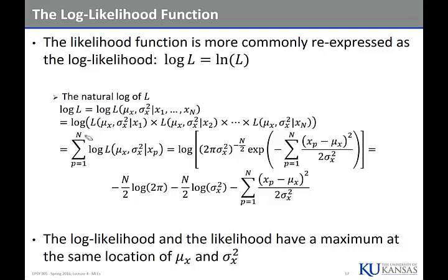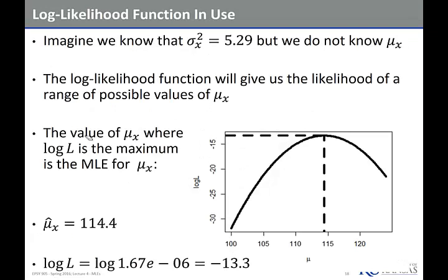We took the log of all those functions. The log is nice because it takes a product — the log of a product of things becomes the sum of the log of those things. So this log of the product becomes the sum of the logs. What it works out to be is this ugly function down here. But the nice thing about the log likelihood is that the maximum happens at the same point. The likelihood function had a value very close to zero — like five zeros and 167. The maximum of the log likelihood happens at negative 13.3, which is actually the log of that other number. The value that maximizes is again 114.4 — it's the same value.